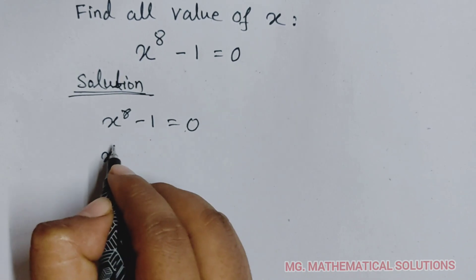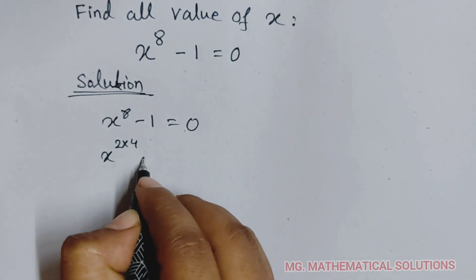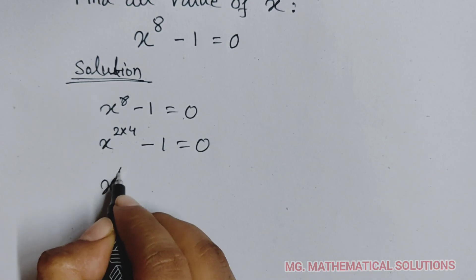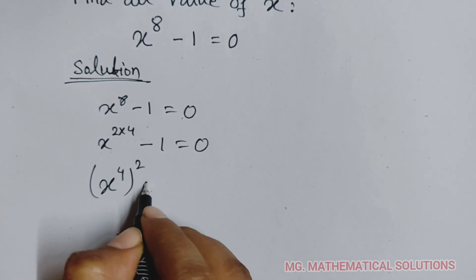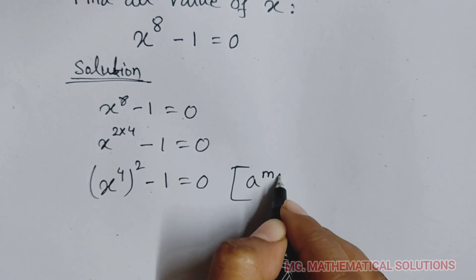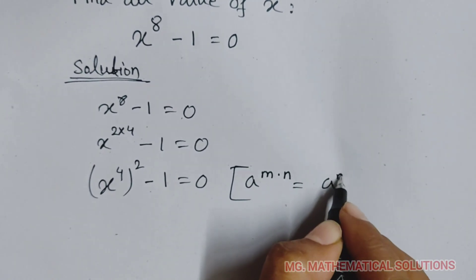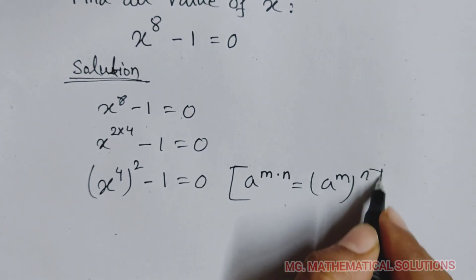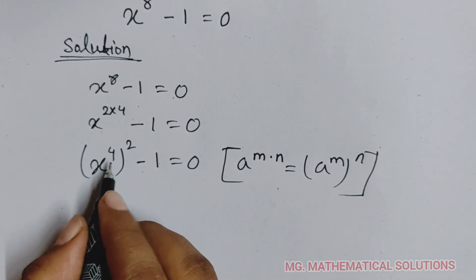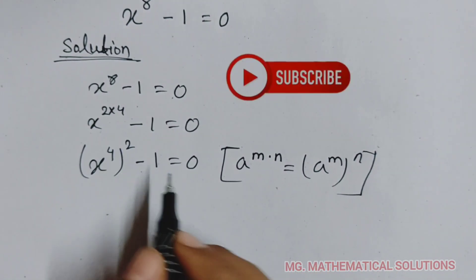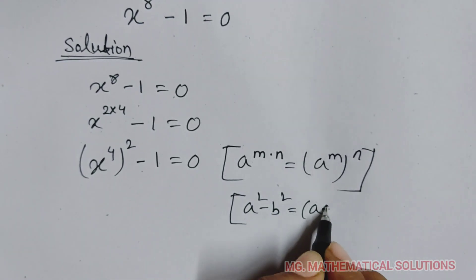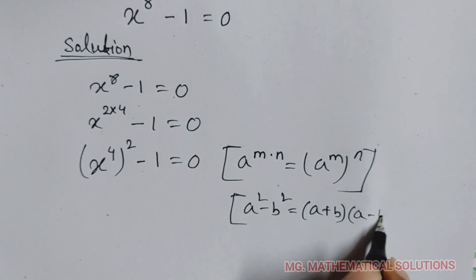We can write 8 as 2 into 4, so x to the power 4 whole to the power 2 minus 1 equal to 0. Here we use the formula a to the power m into n equal to a to the power m whole to the power n. Now we use the a squared minus b squared formula, which equals a plus b whole into a minus b.